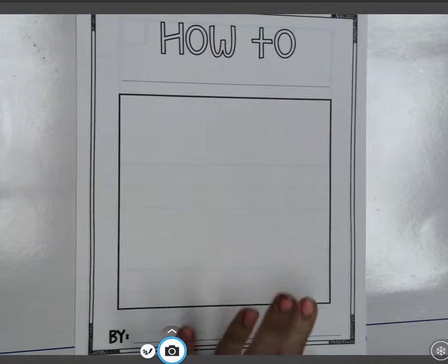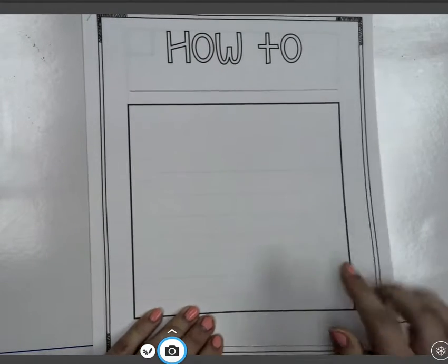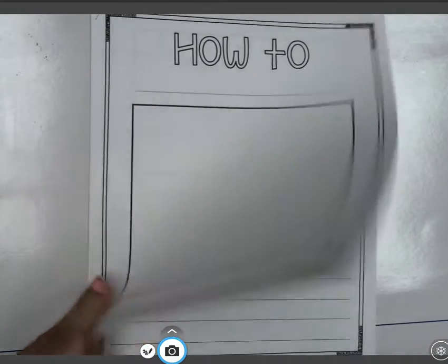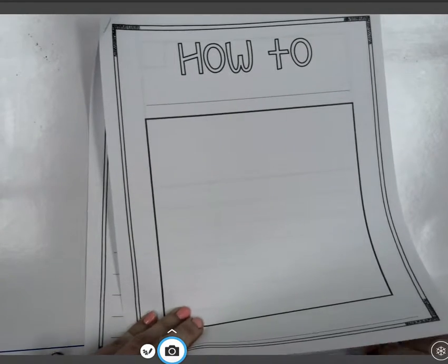So you are going to need your how-to booklet. It looks like this. It's stapled, and it has how-to on the front, and then it has three pages that look like this.